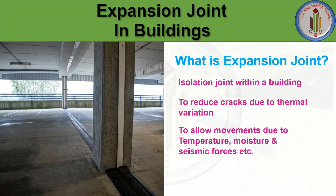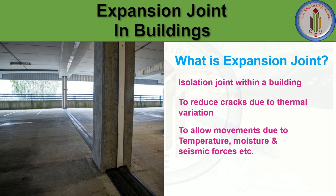An expansion joint is a joint provided to separate a building unit into two segments. The building will be in a single unit, and in between we need to provide the expansion joint, which divides the single unit into two segments. This expansion joint is an isolation joint provided within a building to permit the separate segments of the structural frame to expand and contract in response to temperature changes, without adversely affecting the building's structural integrity or serviceability.